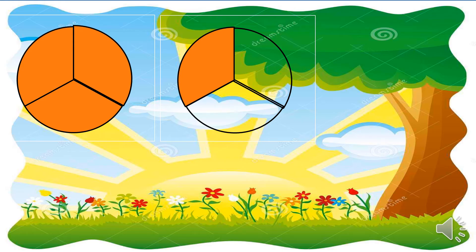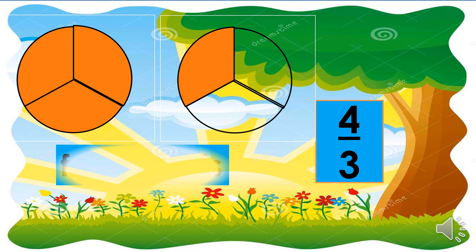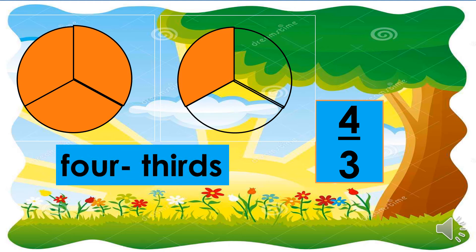How many are the shaded parts in these two circles? There are four shaded parts, so four should be written as the numerator. And each circle is divided into three equal parts, so three is the denominator. The fraction symbol for this is four-thirds. Here is the fraction word: four-thirds.